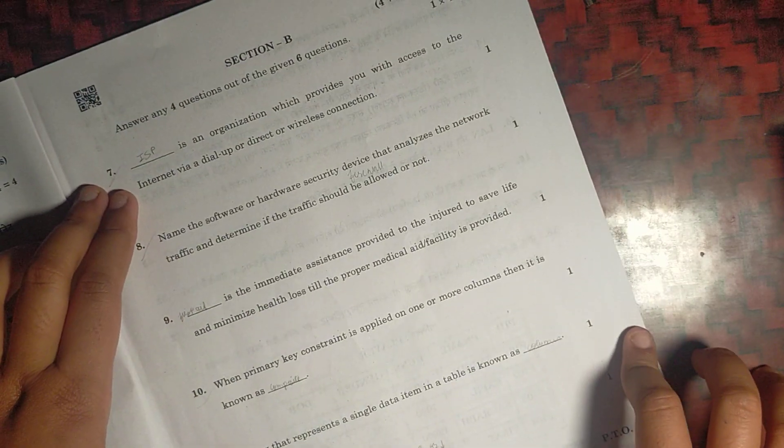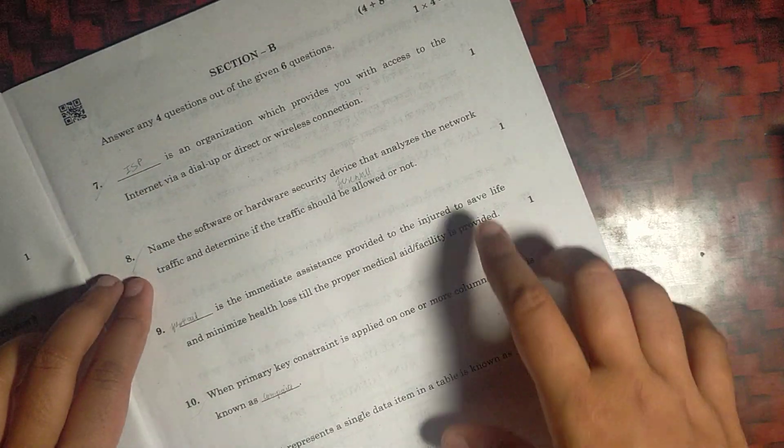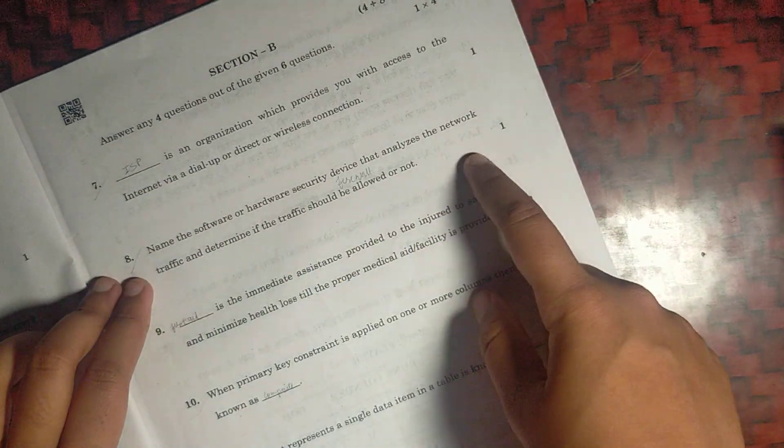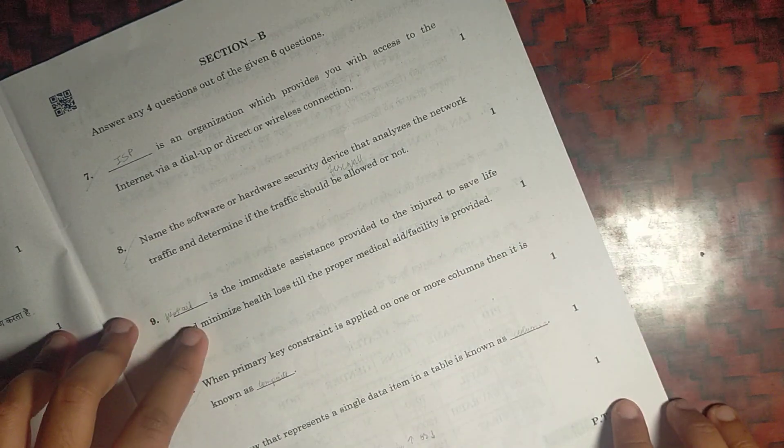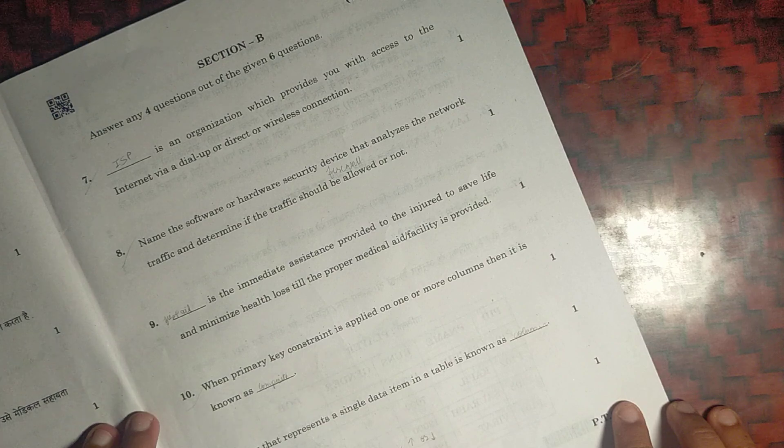Seventh question, ISP will be the answer, Internet Service Provider. Eighth question, answer would be firewall. Ninth, first aid. Tenth would be composite primary key. Eleventh would be column.